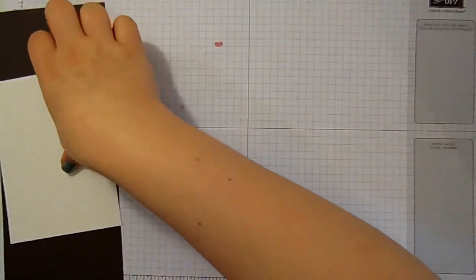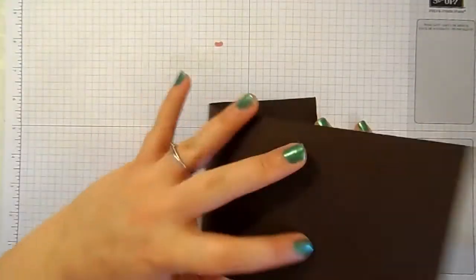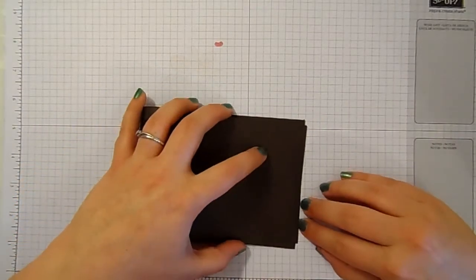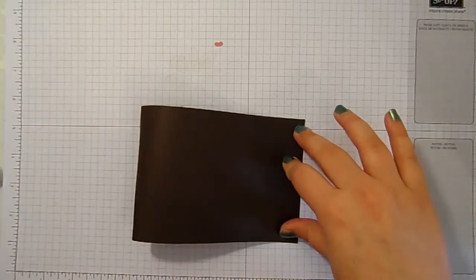So, first of all, I'm going to fold my piece of early espresso in half to form my card base.